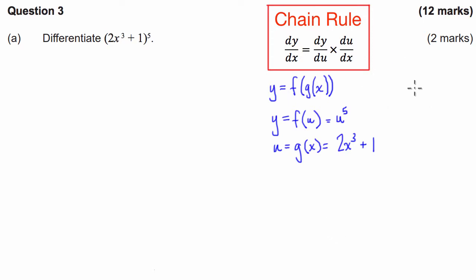Now what the chain rule says is: to get the overall derivative dy/dx, we first take the derivative with respect to the substitution variable — that is, dy/du, which is the derivative of y with respect to u — and then we multiply it by the derivative of the substitution variable with respect to x, du/dx, which is the derivative of this second function.